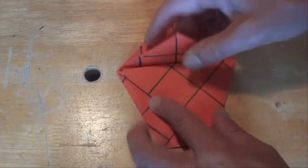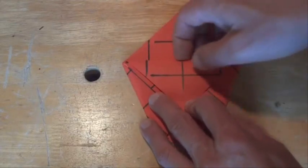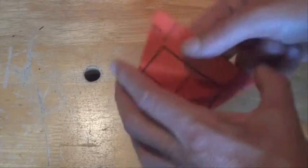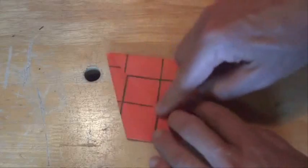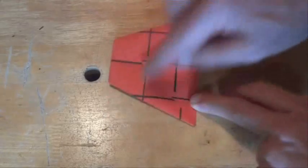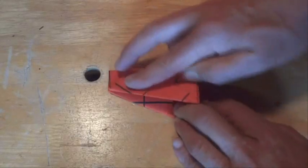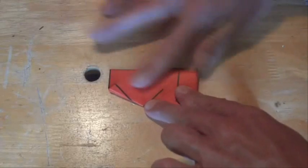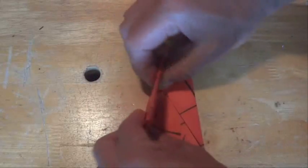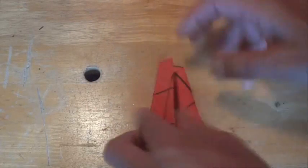Now we'll fold that top piece down over that section, and the other piece over there. And then down the middle here, we'll fold that edge over so it touches this side, and fold back the other way.